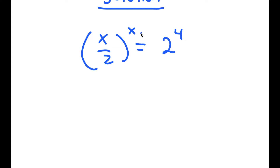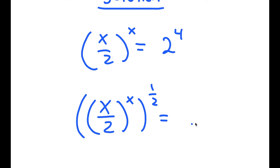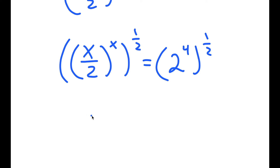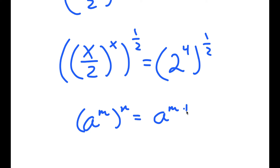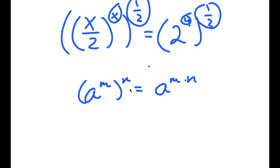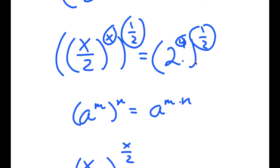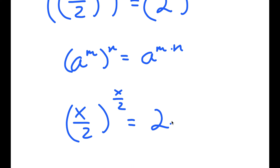Now I'm going to take the power of 1 over 2 on both sides. So I get x over 2 to the power of x, to the power of 1 over 2, is equal to 2 to the power of 4 to the power of 1 over 2. If I have something in the form a to the power of m to the power of n, this is equal to a to the power of m times n, meaning these two multiply and these two multiply. So x times 1 half is just x over 2, and 4 times 1 half is the same thing as 4 divided by 2, which is just 2.